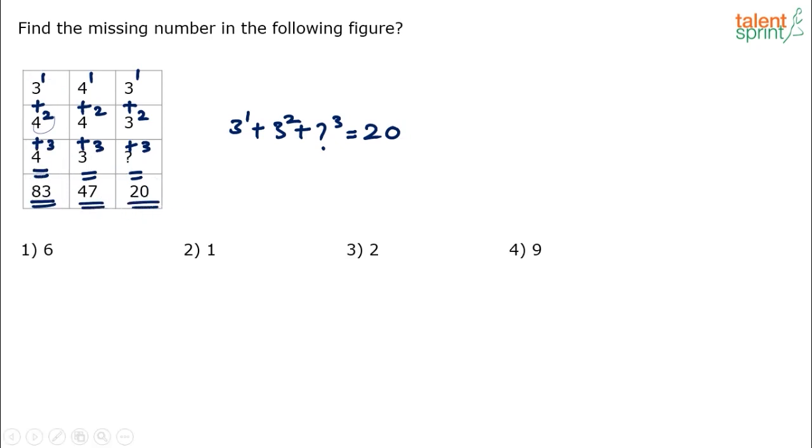Simplify that. Three power one plus three squared plus question mark cubed equals to twenty. You understood? We are taking the first power in the first row, second powers in the second row, third powers in the third row to get the results in the fourth row. Sum of the first three rows to get the result of the fourth row. So do that now. Three plus nine, twelve. Twelve plus question mark is twenty, or question mark cubed is twenty minus twelve, which is eight. What cube is eight? Two cube is eight.